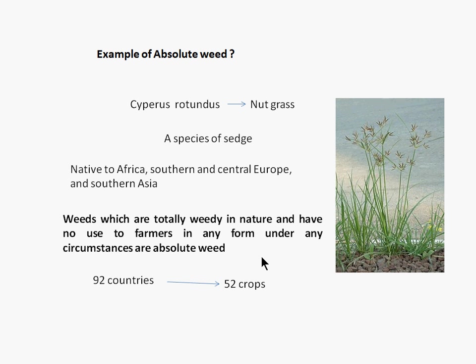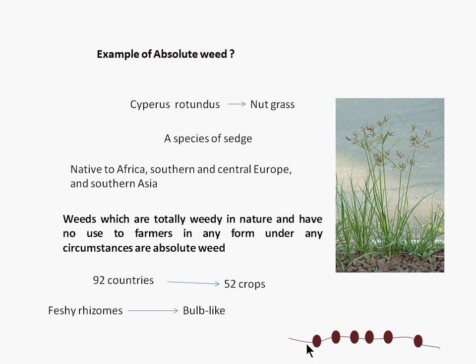When Cyperus rotundus grows inside the soil, it will form a fleshy rhizome, and this fleshy rhizome will convert into a bulb-like structure. If you uproot the root of Cyperus rotundus, you will see a chain of different bulbs on the root. That's why its management and control is very tough. If you uproot it and even one bulb remains inside the soil, that will regenerate into Cyperus rotundus — making management and control very tough.